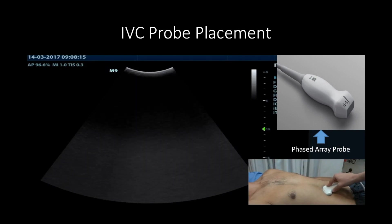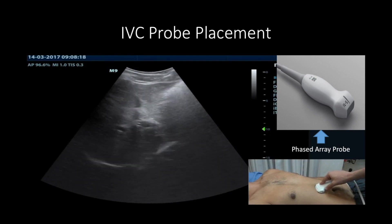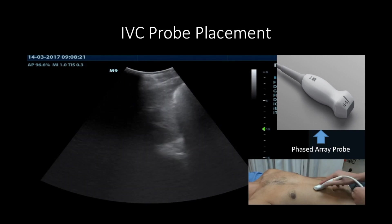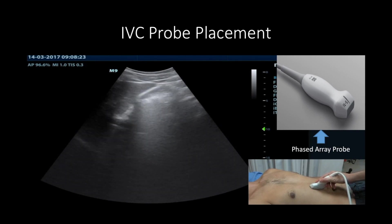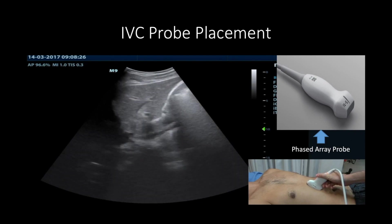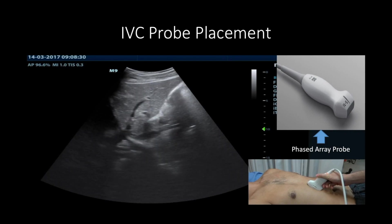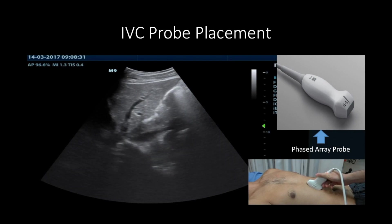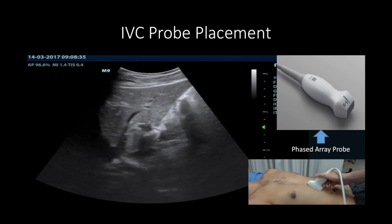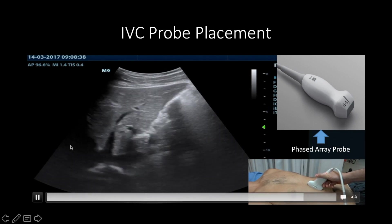To visualize the IVC, we want to use a subcostal view by placing the phased array probe on the right upper quadrant with the probe marker pointing towards the patient's head. Once the IVC can be seen, look for landmarks to verify it — the best landmark is the hepatic vein inlet draining into the IVC, as it helps differentiate from the aorta. You can also identify the right atrium.